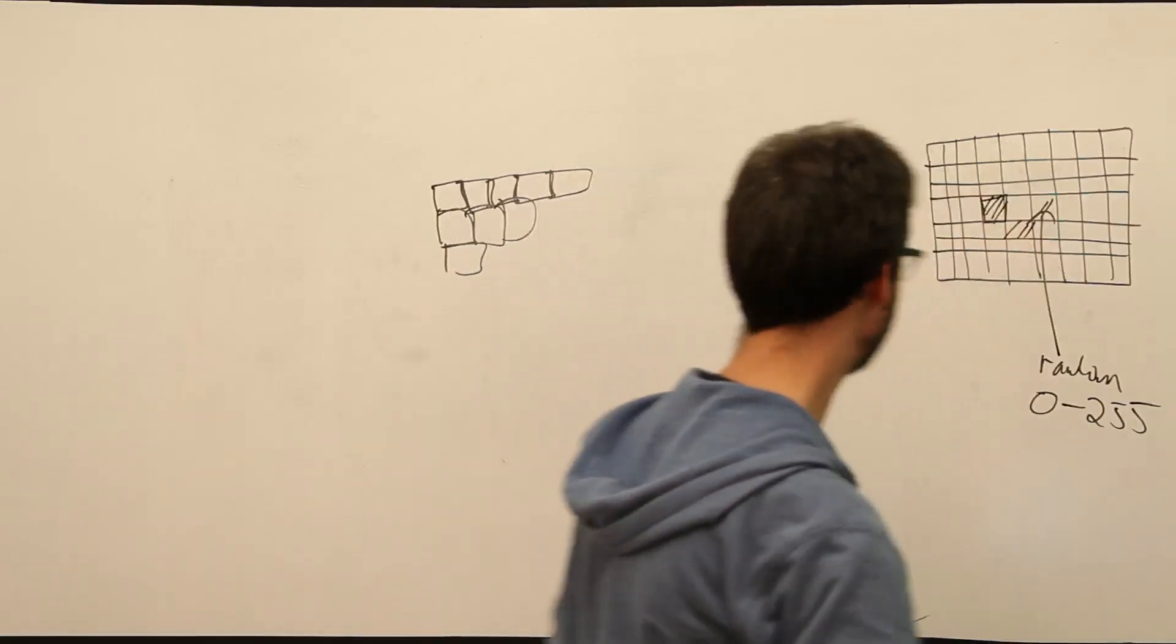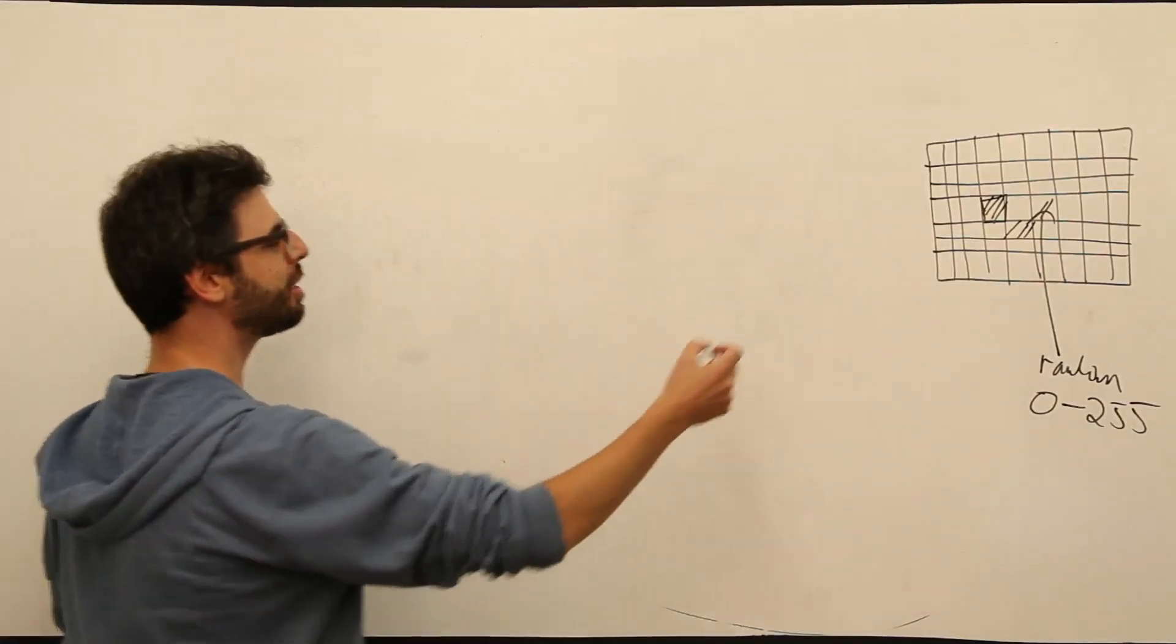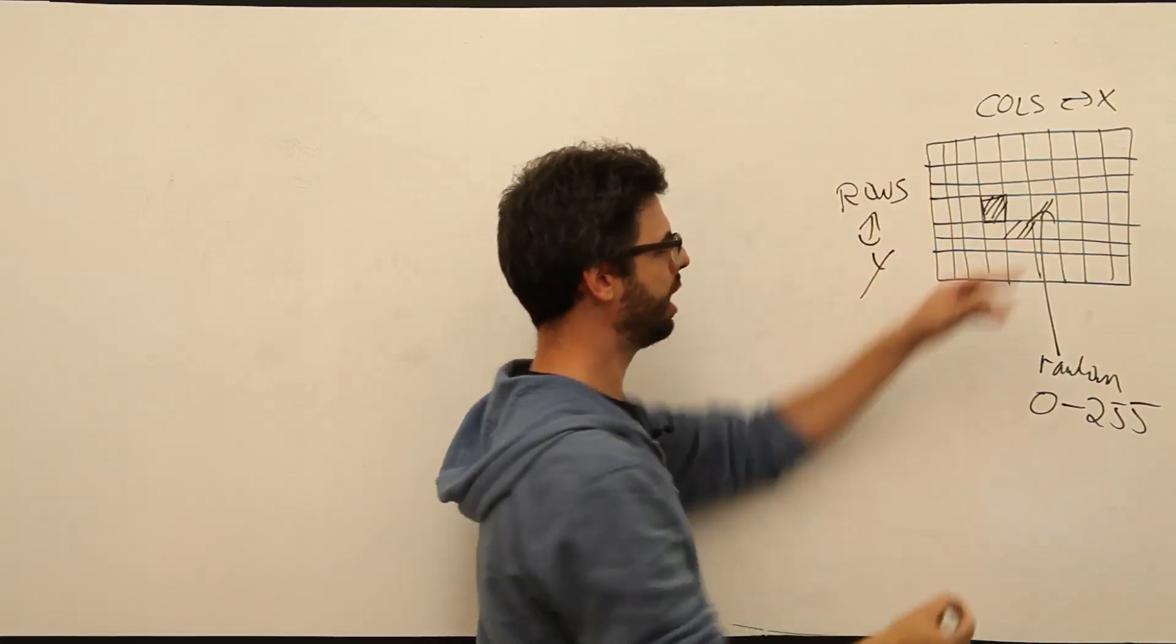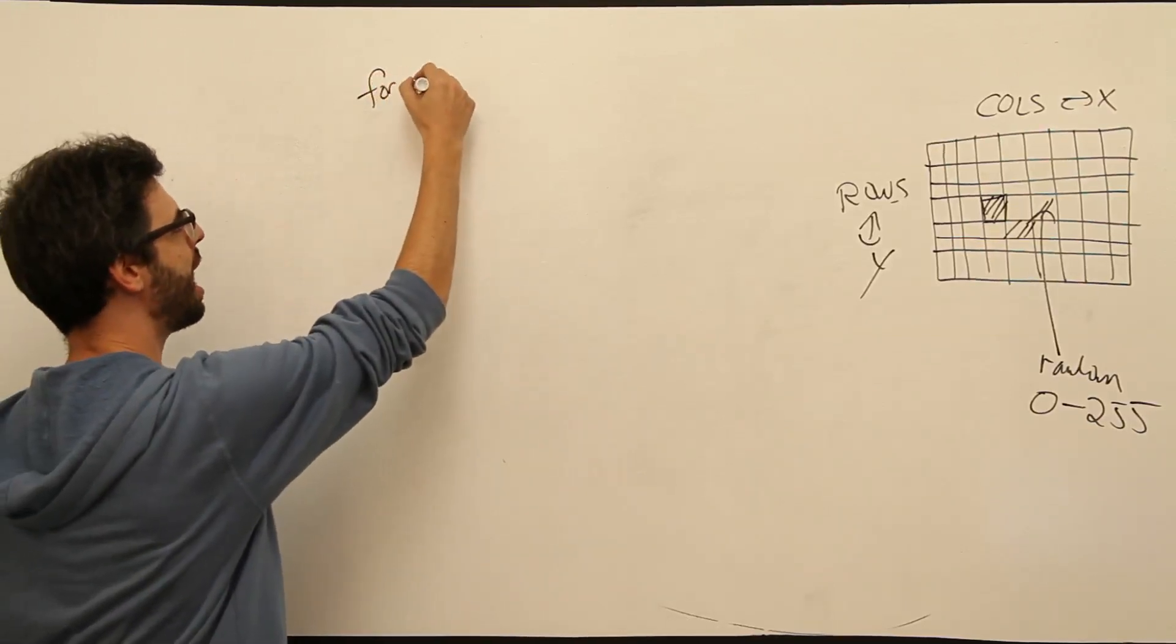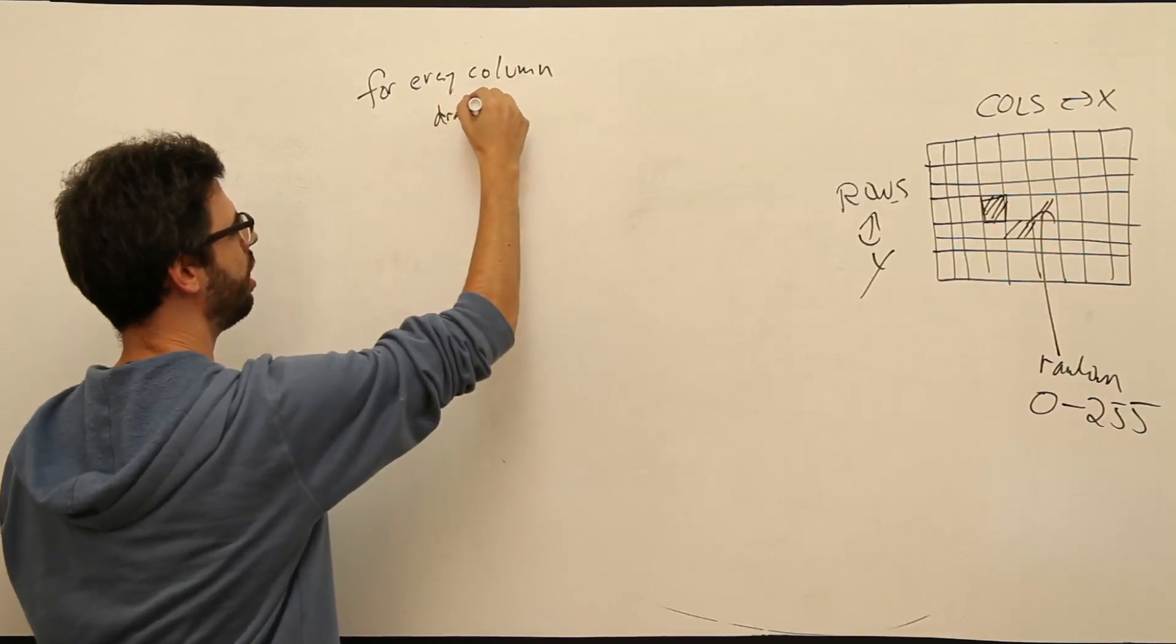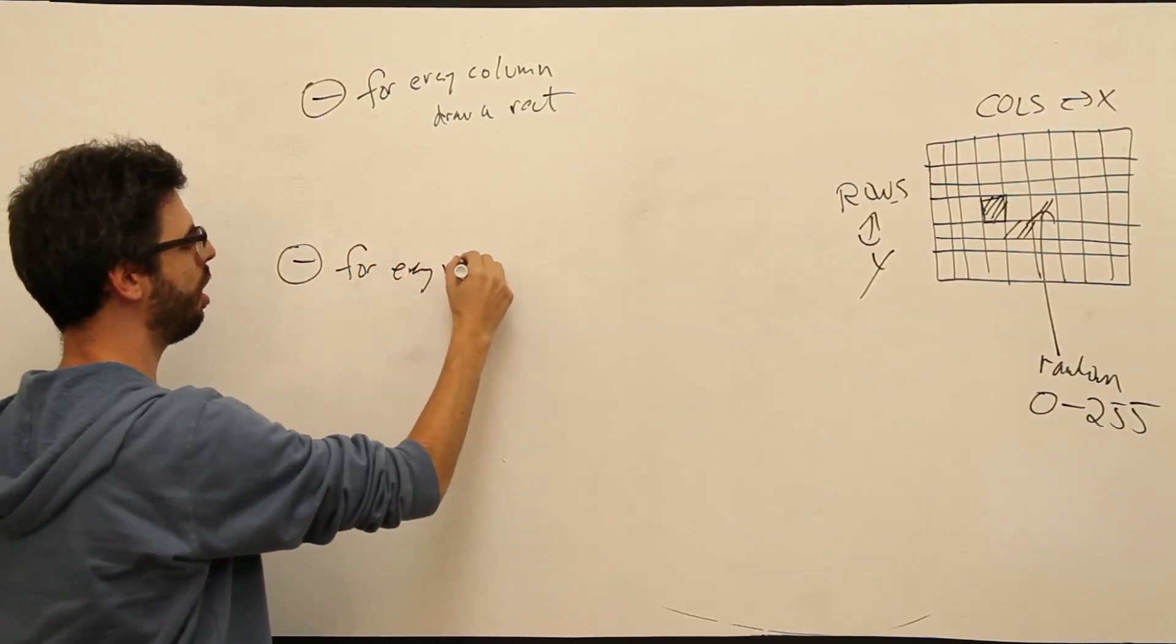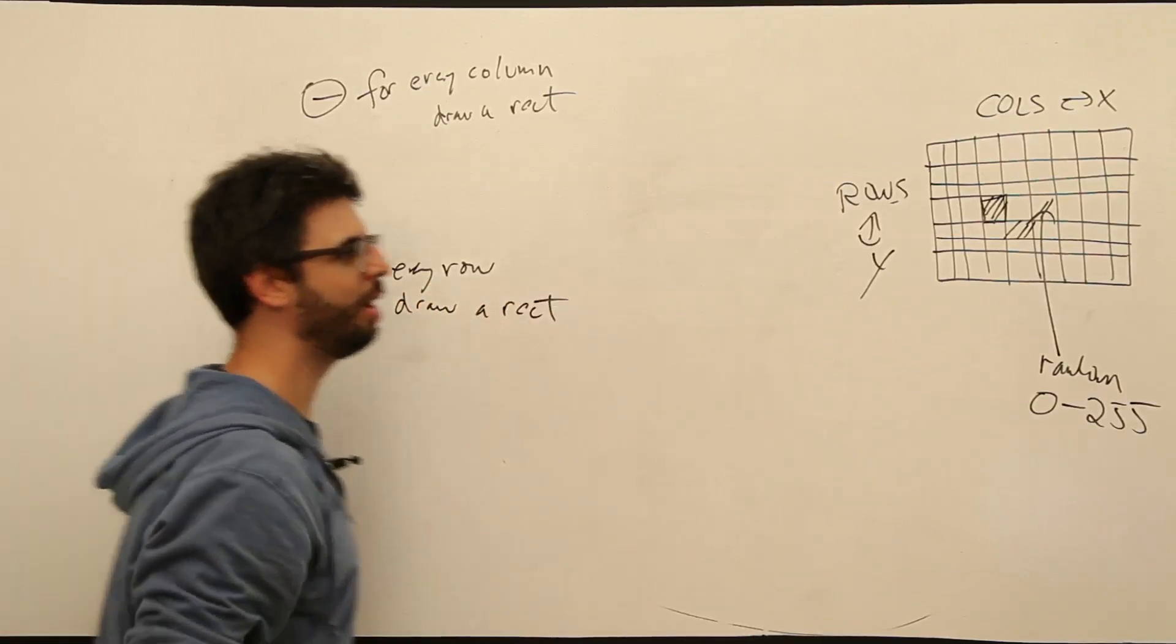What are we really saying here? We could be saying one thing, right? We have this idea of columns, which we're thinking of as x, and rows, which we're thinking of as y. These are the rows, these are the columns. We are saying, for every column, draw a rectangle. We also are saying, for every row, draw a rectangle. Well, that's what we did.